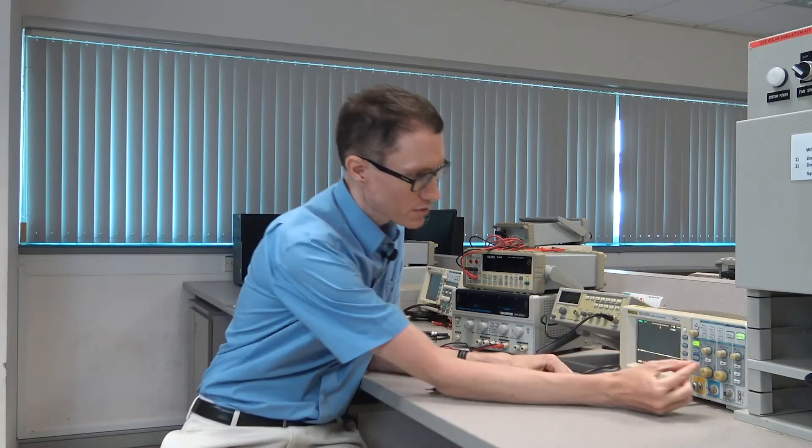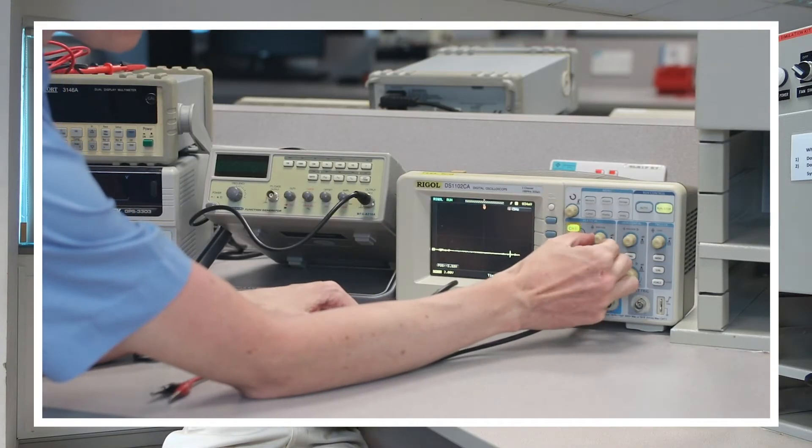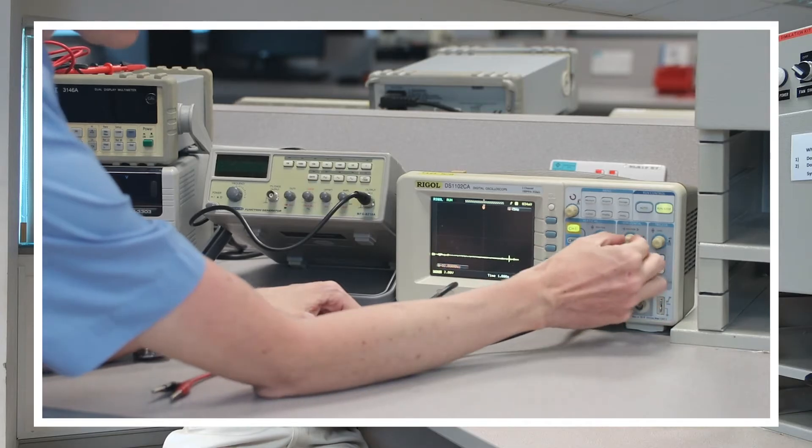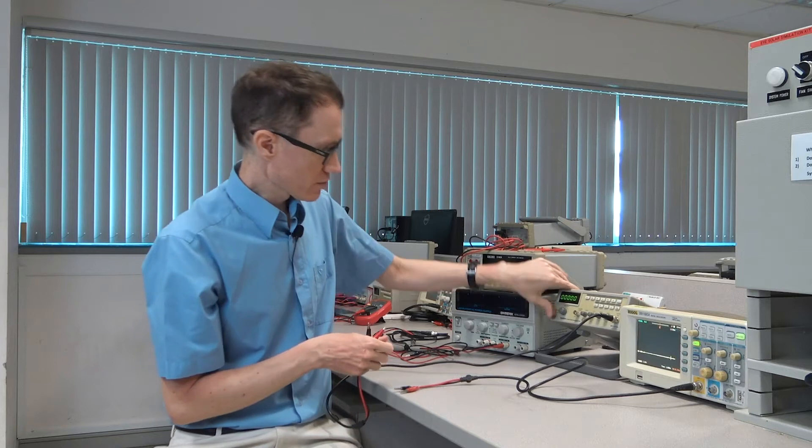Now some of these knobs, for example the vertical position knob, it just shifts the whole plot up and down. We've got also a horizontal scale knob that does the same thing. Let's turn on the function generator.